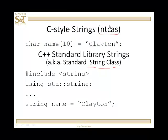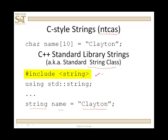Alternatively, we can create a string type object 'name' and initialize it to Clayton. I've included the library string, and that gives you the ability to use some built-in functions that the string class has. There are lots of functions and some implementations include more functions than others.